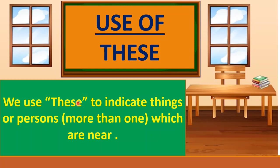We use 'these' to indicate things or persons more than one which are near. 'These' ka matlab hota hai 'yeh sab.' Hum 'these' ka use ek se adhik cheez ya insaan ke liye karte hain jo hamare najdeek hoti hain. So we use 'these' for things or people near us.